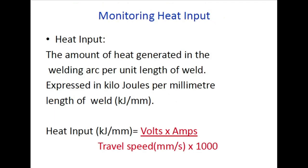Monitoring heat input: heat input is the amount of heat generated in welding per unit length of weld. After completing 1 meter of welding, the heat generated is called heat input. The unit is kilojoules per millimeter (kJ/mm). The formula is: heat input = (volts × amperes) / (traverse speed × 1000).